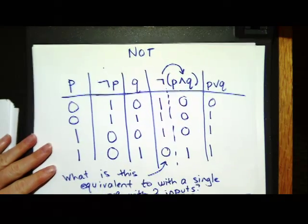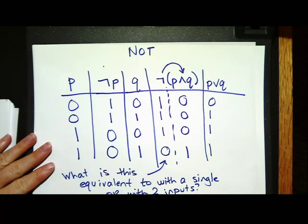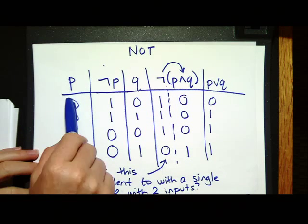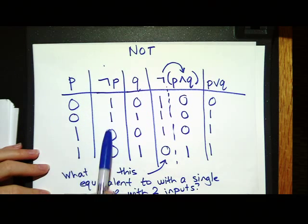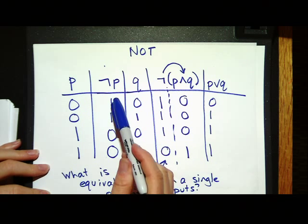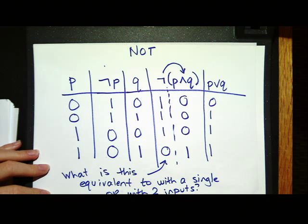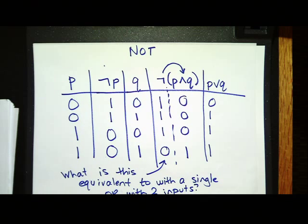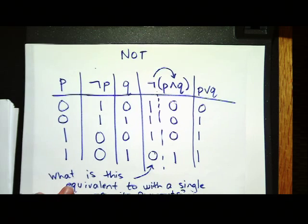For NOT — NOT takes whatever the input variable is and negates it. So if P is 0, 1, then NOT P is the opposite: wherever P is 0, NOT P is 1.